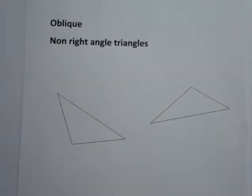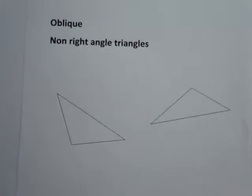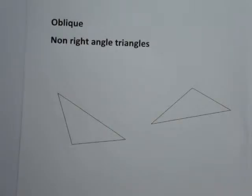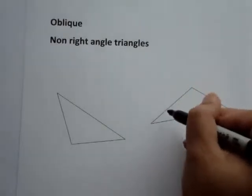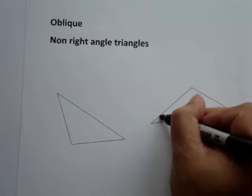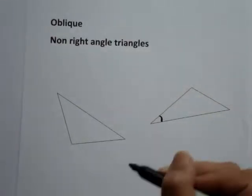When we're talking about non-right-angle triangles, these are called oblique triangles, and they don't have a right angle. We can also have acute oblique, where that angle is acute — less than 90 degrees.